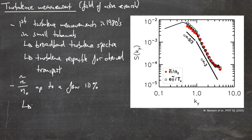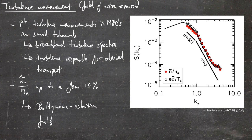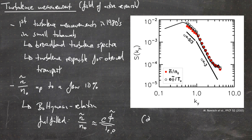The Boltzmann relation is fulfilled. The Boltzmann relation basically says that the normalized density variation is approximately equal to the normalized potential variation. This is also called an adiabatic response.